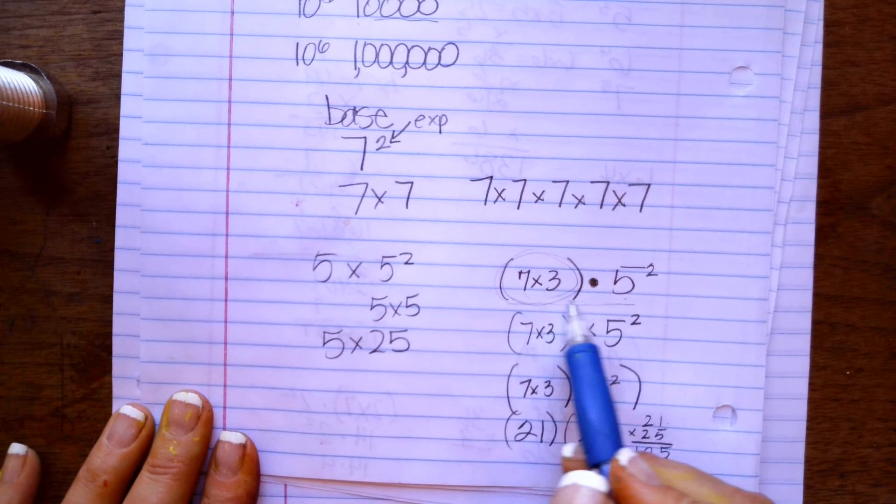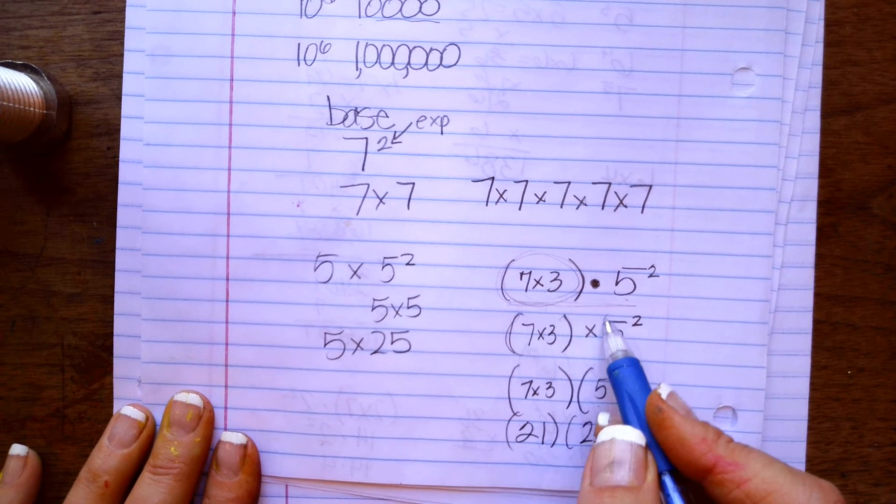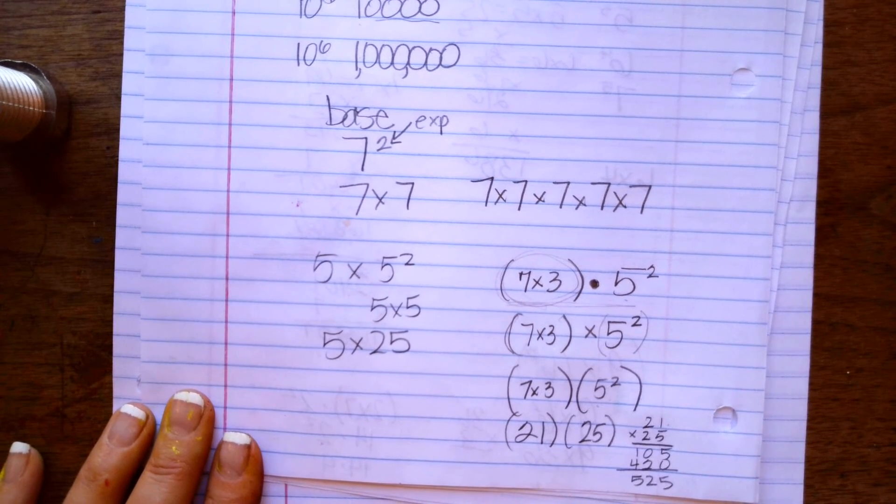If you see something like this, you do what's inside the parentheses first, and then you multiply that times whatever the exponent and base are.